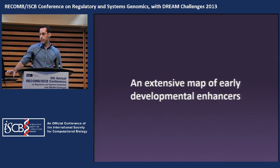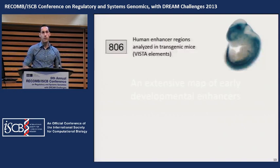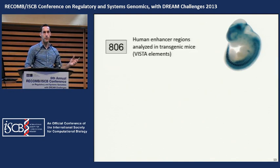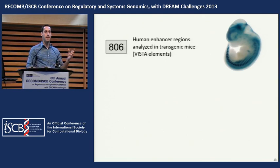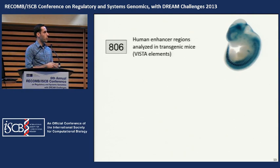This data represents an extensive map of early developmental enhancers. Enhancer elements in the human genome have typically been identified by taking a piece of conserved DNA and placing it upstream of a reporter gene driving beta-galactosidase in a mouse, producing tissue-specific expression patterns. We wanted to overlay our data with the set of VISTA elements from the VISTA Enhancer Browser, which contains 806 elements from the human genome that reproducibly drive tissue-specific expression in mice.